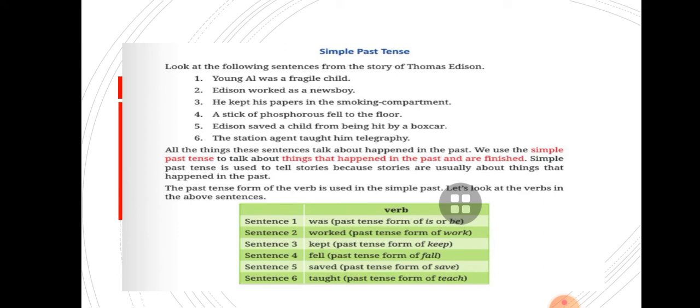The past tense form of verb is used in simple tense. Let's look at the verbs in the above sentences. Sentence 1: was. Young L was a fragile child. Was is a past tense form of is or be. Sentence 2: Edison worked as a newsboy. Worked is past tense of work. Sentence 3: He kept his paper in the smoking compartment. Kept is past tense of keep. Sentence 4: A stick of phosphorus fell on the floor. Fell is past tense of fall. Sentence 5: Edison saved a child from being hit by a boxcar. Saved is past tense of save. Sentence 6: The station agent taught him telegraphy. Taught is past tense of teach.